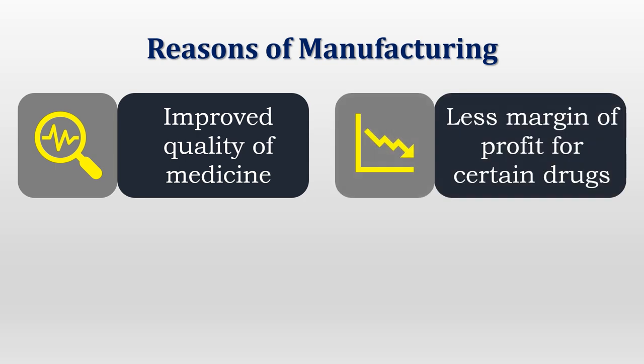Another reason is unavailability of certain drugs. Because of less margin of profit or because the quantity of the ordered product is very less, industries are not able to manufacture such products. Such drugs remain out of stock in the market, and hence you can take the decision to manufacture at your own premises.